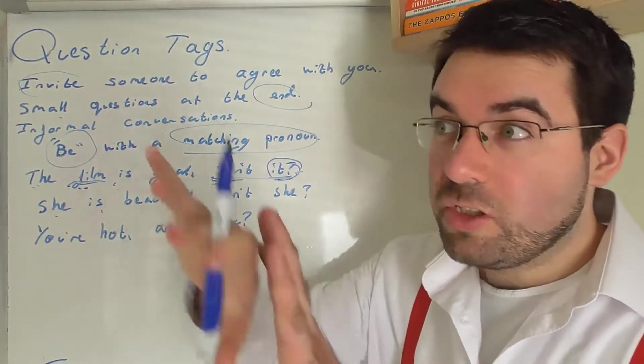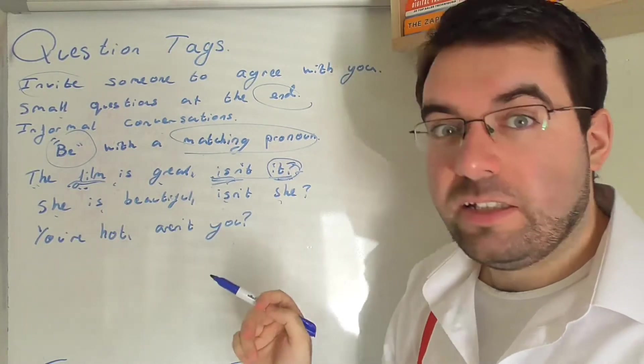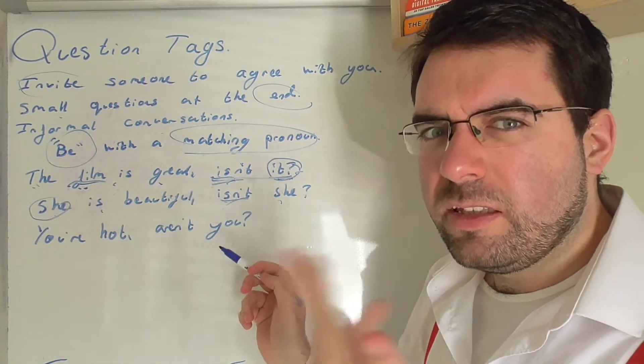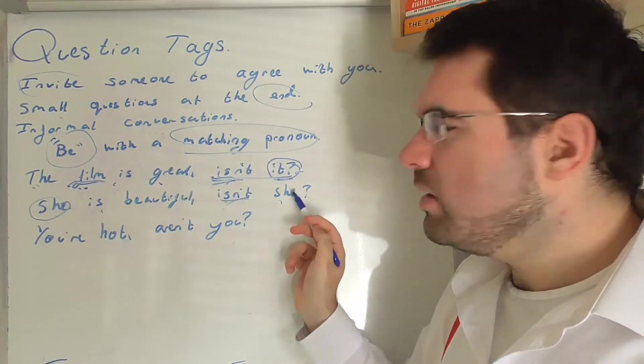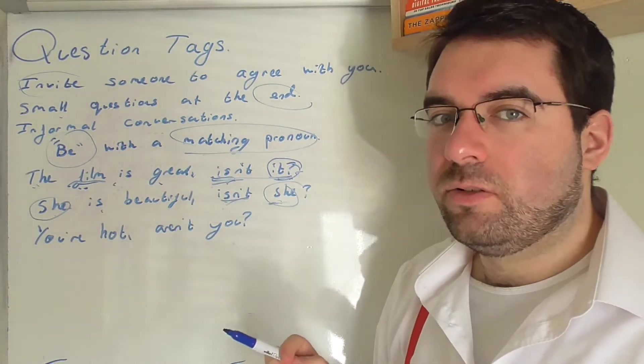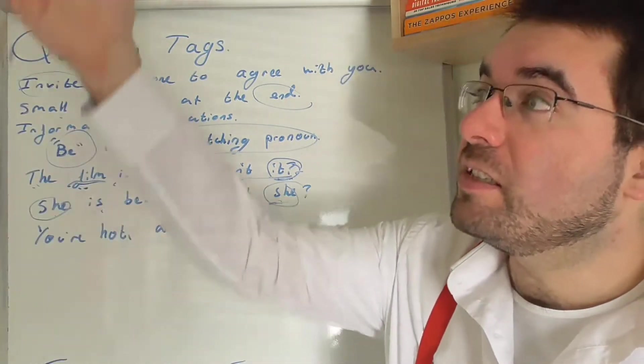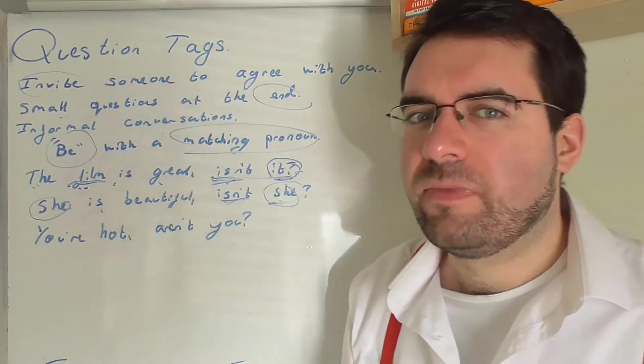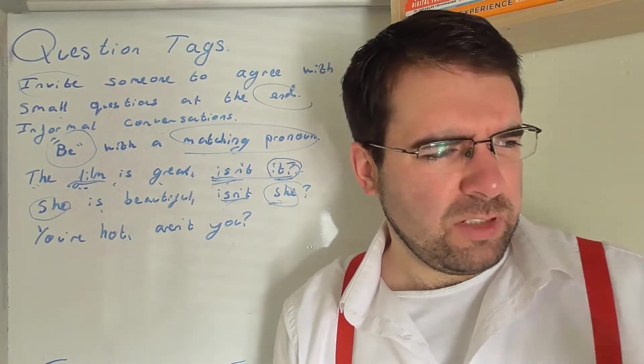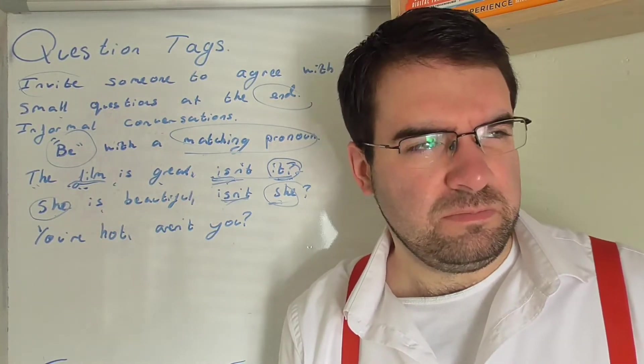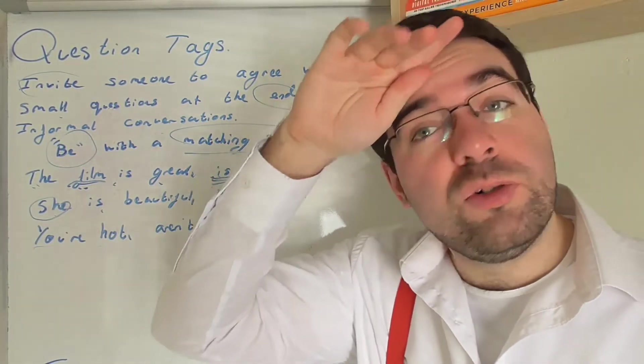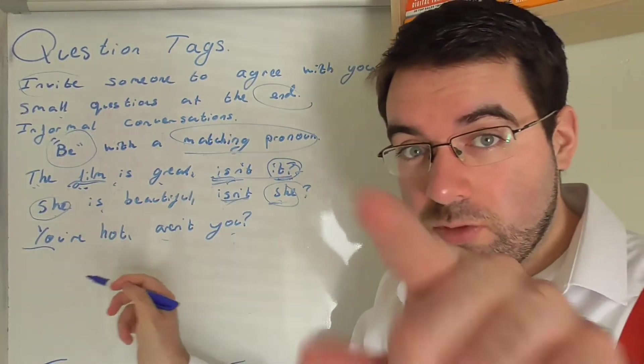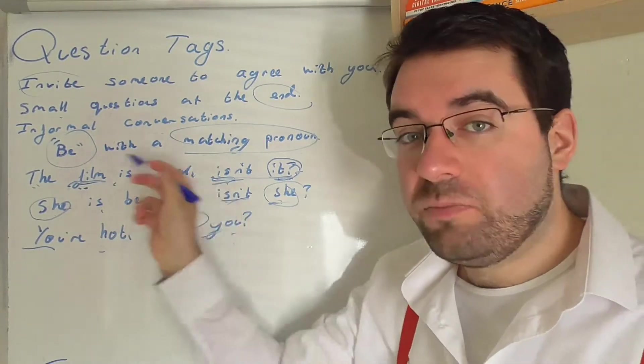She is beautiful, isn't she? She is beautiful. Isn't? Be. The state of being is she. Isn't she? Matching pronoun again. She's beautiful, isn't she? It's big, isn't it? It's really loud, isn't it? He's quite smart, isn't he? That's really weird, isn't it?